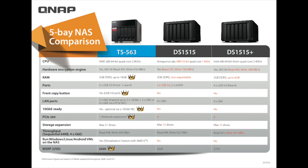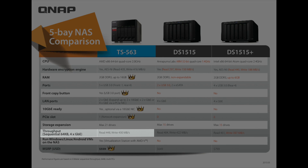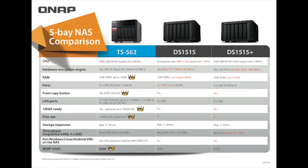Now let's look at throughput of each of the systems. The QNAP TS-563 reads at 448 and writes at 430 megabytes per second. The Synology DS-1515 reads at 404 and writes at 422 megabytes per second. The DS-1515+ reads at 451 and writes at 397 megabytes per second. There you can see the throughput of each of the systems.